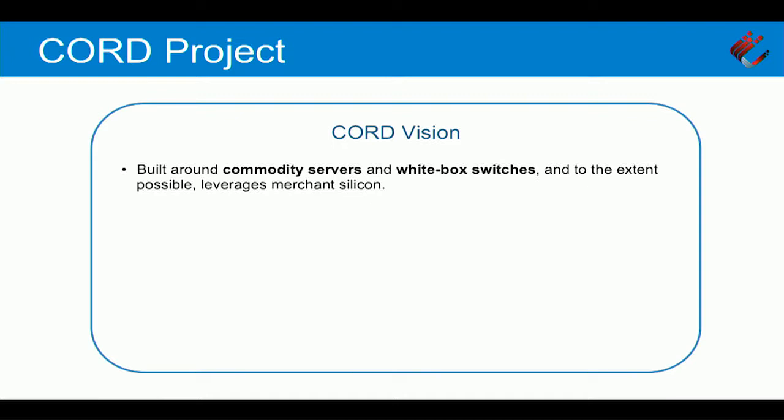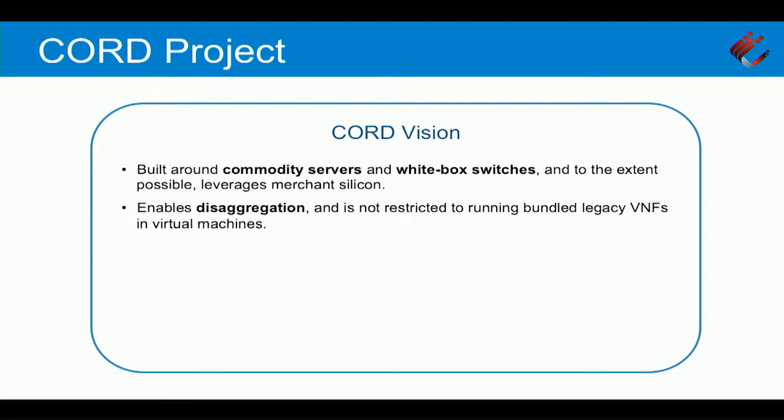The first point is that we're building CORD around commodity servers and white box switches. We really need to hit that sweet spot — leveraging merchant silicon to the maximum degree possible. The second point is that we're focused on enabling disaggregation. We don't want to simply take what used to be wrapped in tin, put it in a virtual machine, and declare we're done. We're trying to break things apart into smaller elements, because that leads to the possibility of more innovation.